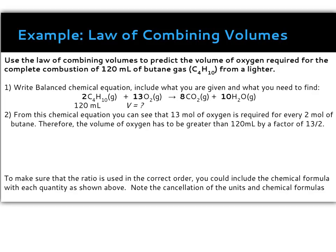An example question: use the law of combining volumes to predict the volume of oxygen required for the complete combustion of 120 milliliters of butane gas from a lighter. Your first step is always to write a balanced chemical equation, then write down what you have and your question mark. Here, the balanced equation for the combustion of butane is at the top. I have 120 milliliters of butane and I'm looking for the volume of oxygen. From this equation, we have 13 moles of oxygen for every 2 moles of butane, so we're going to need a larger volume of oxygen.